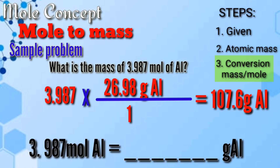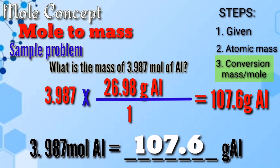So, what is the mass of 3.987 moles of aluminum? The answer is 107.6 grams of aluminum.